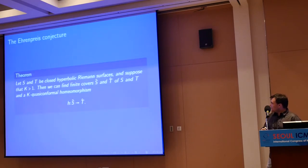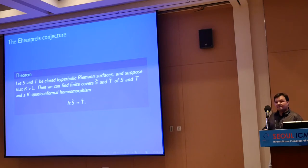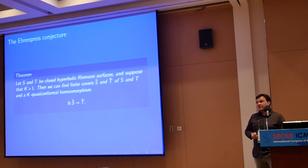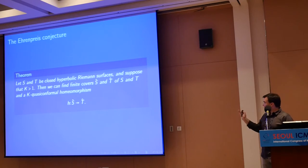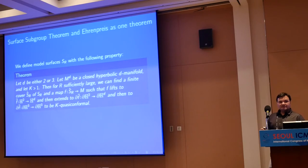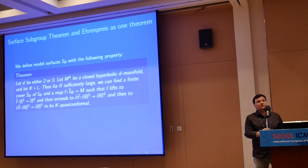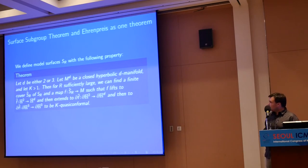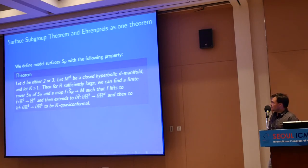The Ehrenpreis conjecture, which we have proven, says that given two closed hyperbolic Riemann surfaces, we can find finite covers that are close in the sense that there is a quasiconformal homeomorphism between them, and we can do that starting with any constant k. Lewis Bowen was particularly the one to connect these two problems — the surface subgroup theorem and the Ehrenpreis conjecture — that don't seem similar on the surface.